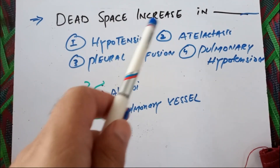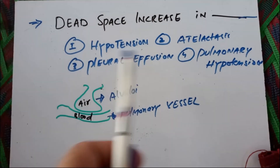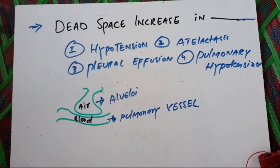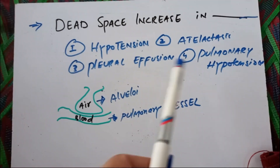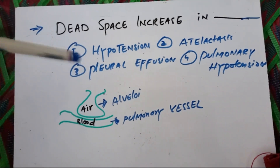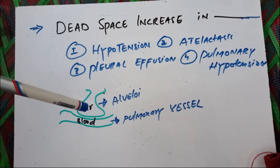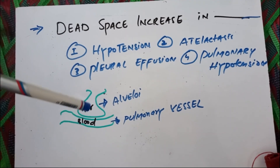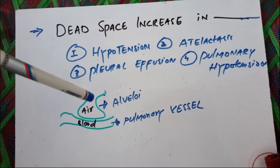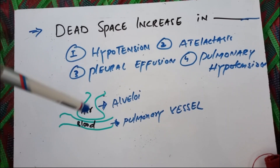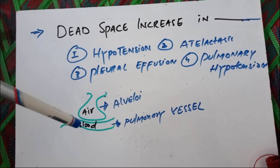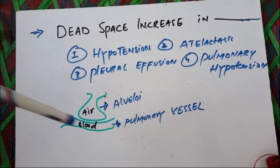Does dead space increase in hypotension, atelectasis, pleural effusion, or pulmonary hypotension? The answer to this scenario is dead space — the amount of air that does not take part in gaseous exchange. Now, the amount of air coming to the alveoli is the same or constant, but the blood coming to the vessel is decreased.